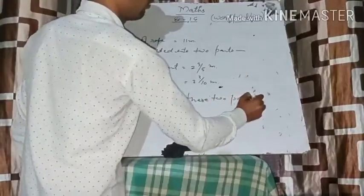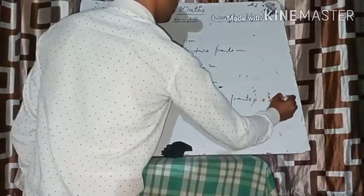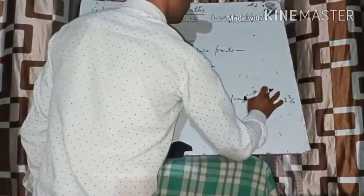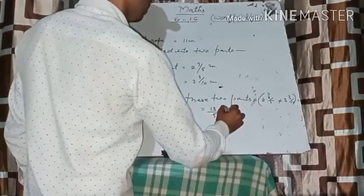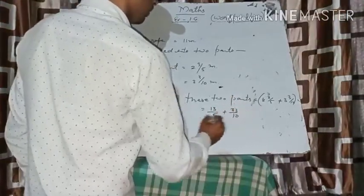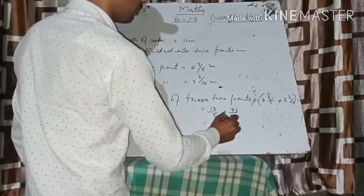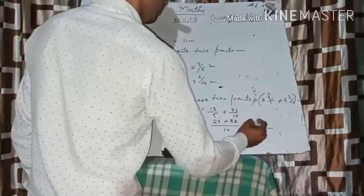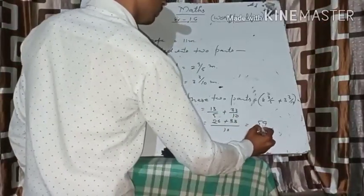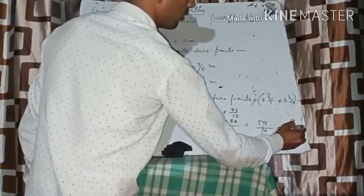Total length of these two parts equals the sum: 2 and 3 upon 5 plus 3 and 3 upon 10. Converting to improper fractions: 13 upon 5 plus 33 upon 10. The LCM is 10, so we get 26 plus 33 equals 59 upon 10, which can be written as 5 and 9 upon 10 meters — the total length of both parts.